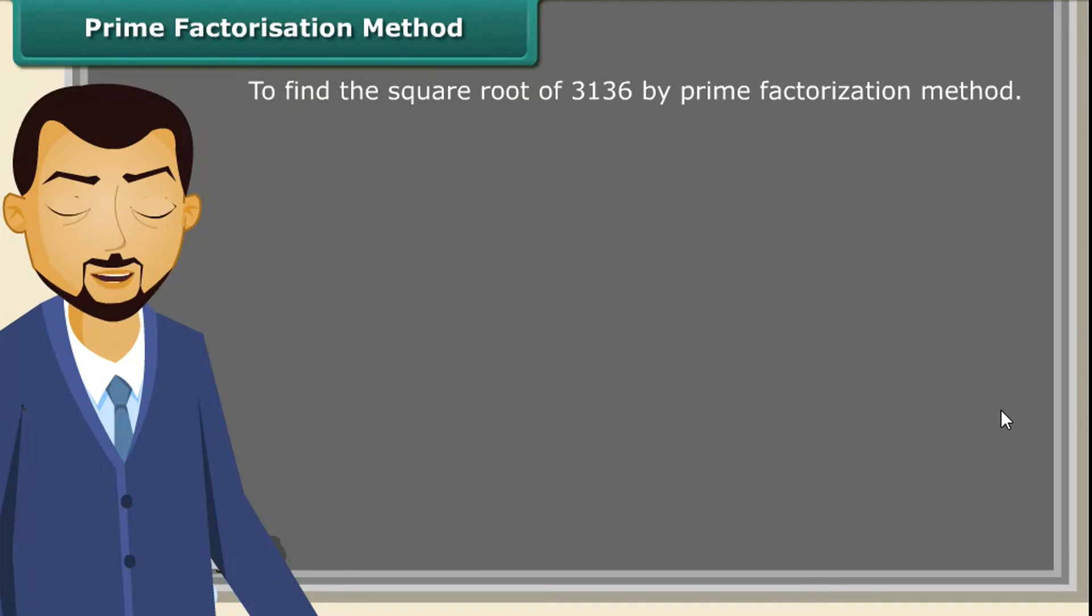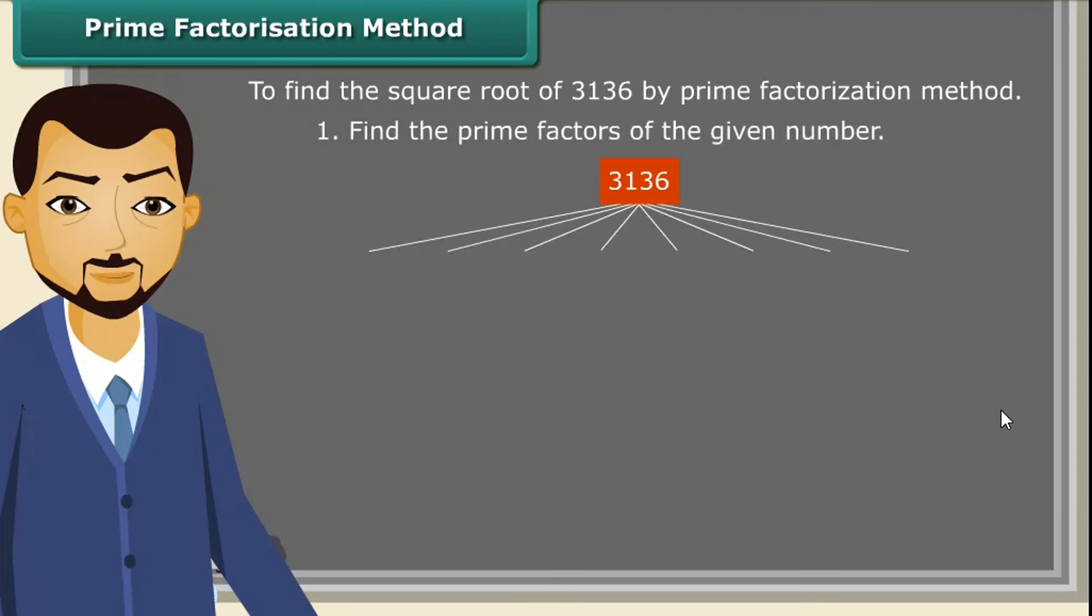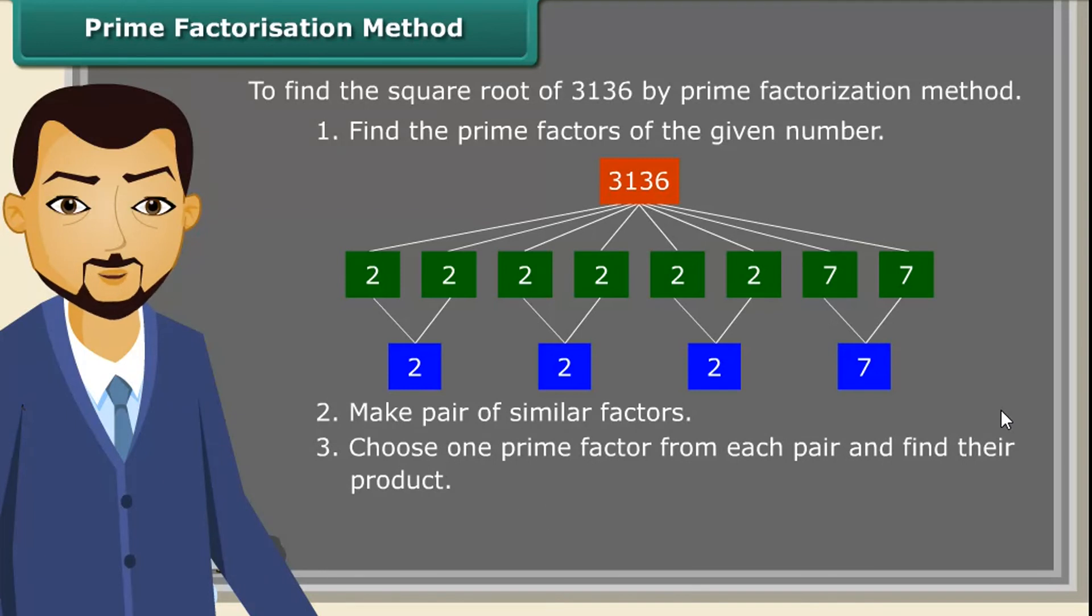Now, we will try to find the square root of a number by prime factorization method by following some steps. First of all, find the prime factors of the given number. Now, make pair of similar factors. After that, choose one prime factor from each pair and find their product. So, the product thus obtained is the square root of the given number.